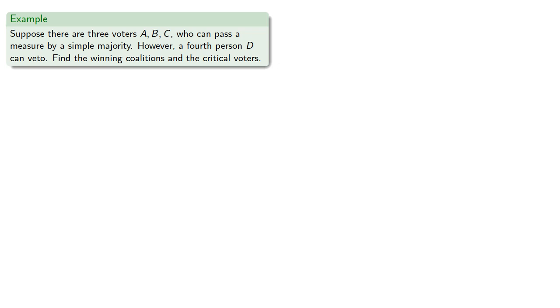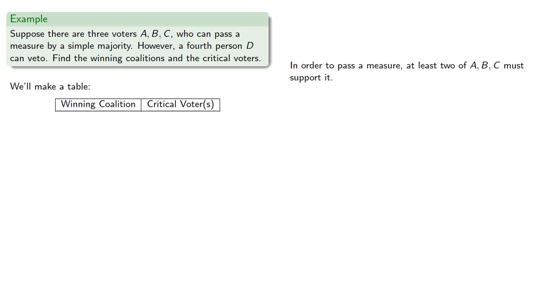Let's find the winning coalitions and the critical voters. We'll make a table. In order to pass a measure, at least two of A, B, and C must support it. Since D can veto it, D must also support it.